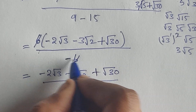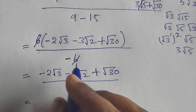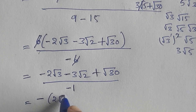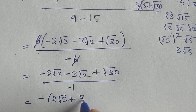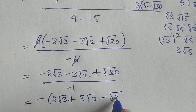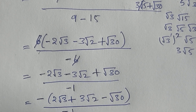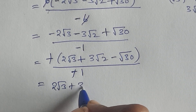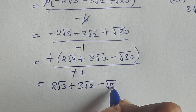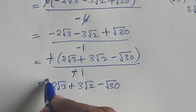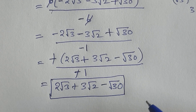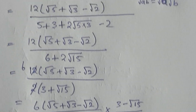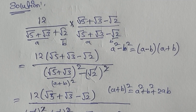So dividing by minus 6: minus divided by minus gives plus, so 6 cancels. We get 2 root 3 plus 3 root 2 minus root 30. This is your answer. Thank you for watching, please do subscribe for more videos. Thank you, take care, bye bye, see you in the next video.